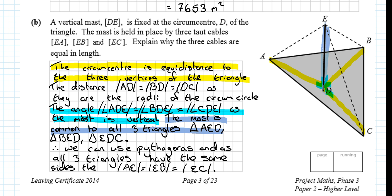And the mast is common to all three triangles. So this is in all three triangles. Well, we have a right-angle triangle. What do you think when you have a right-angle triangle? We can use Pythagoras. And as all three triangles have the same sides, then the length AE will equal to EB will equal to EC. And that's it done.